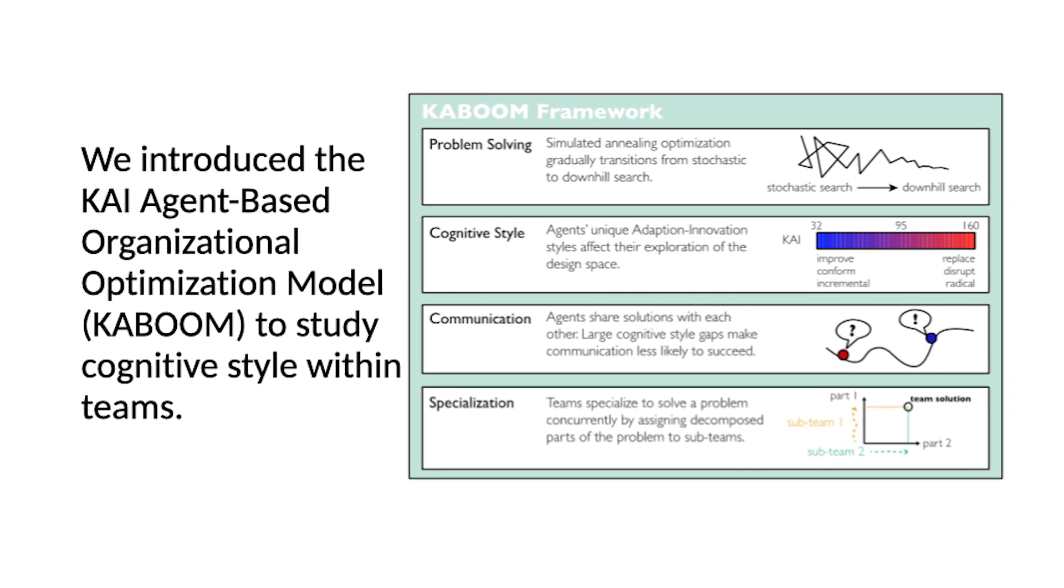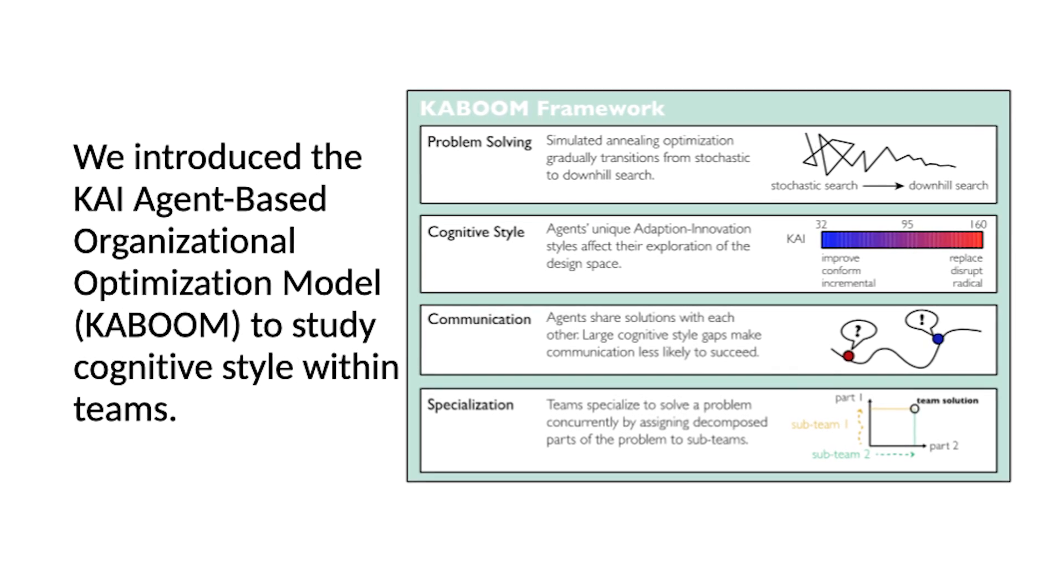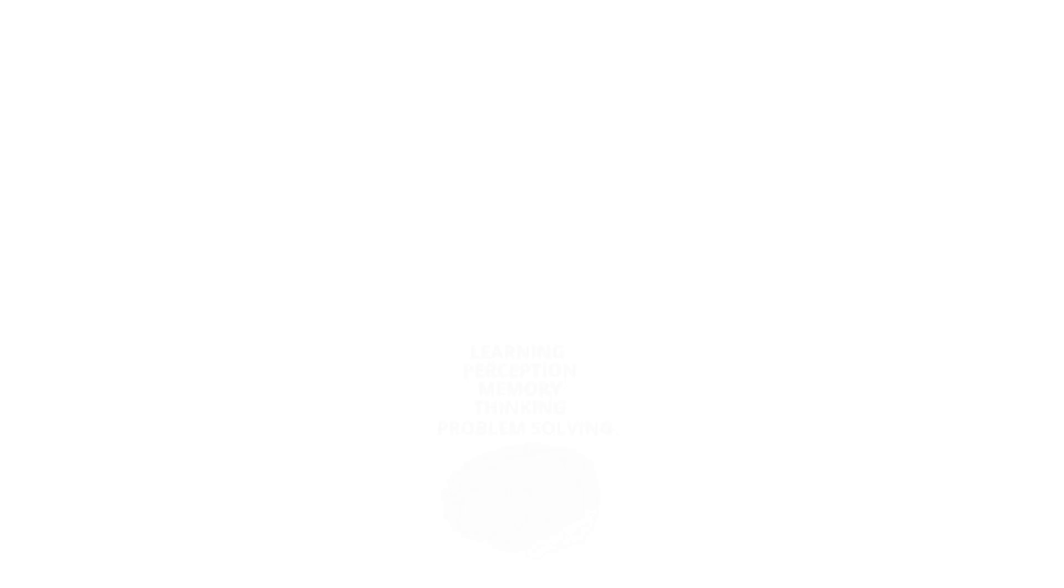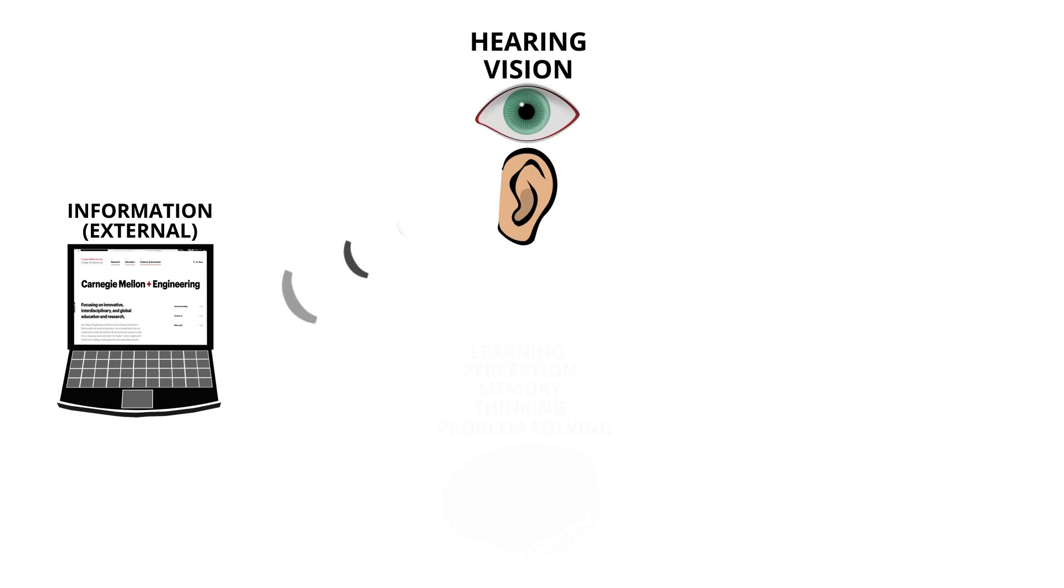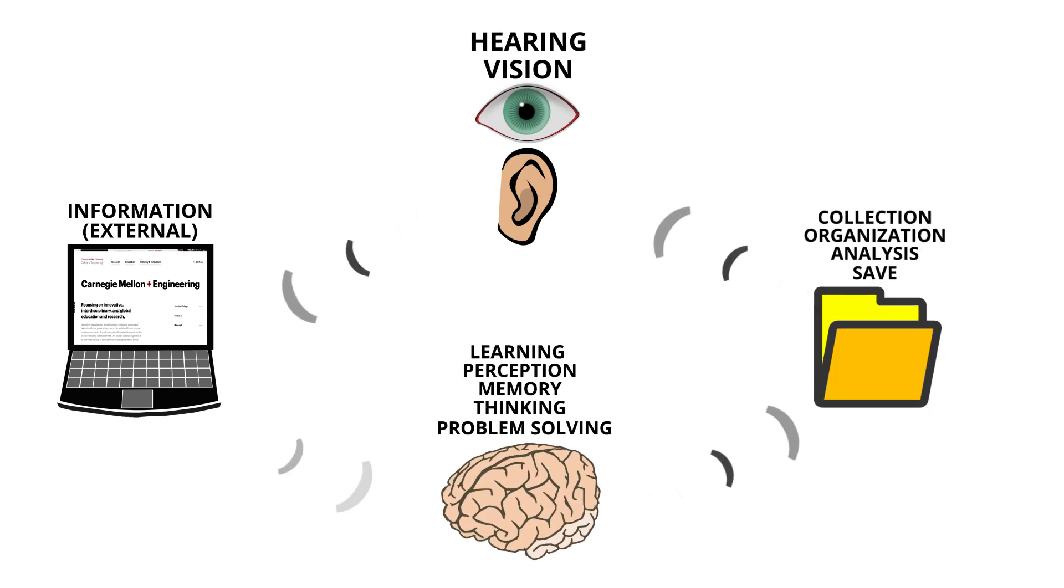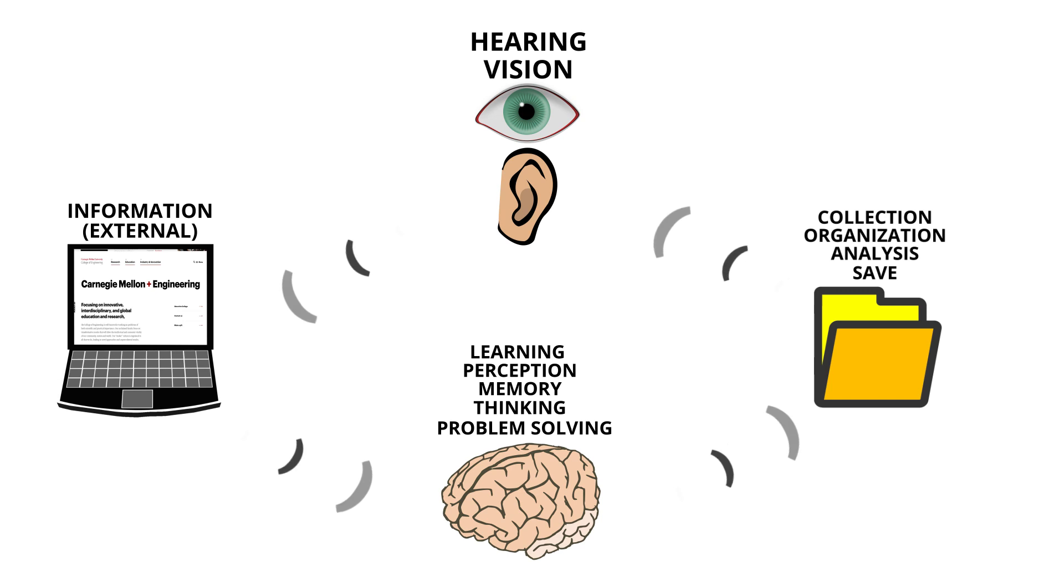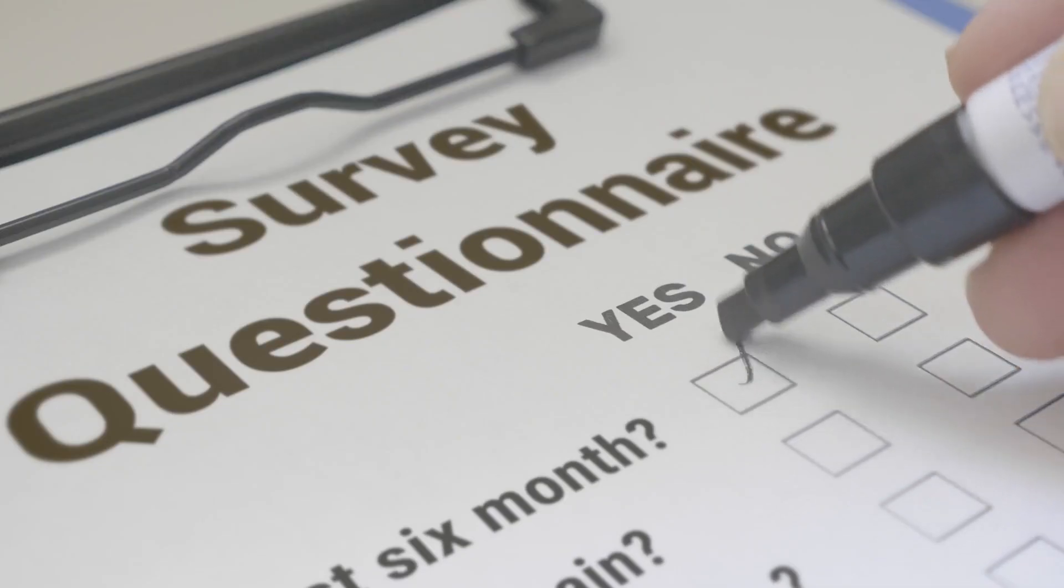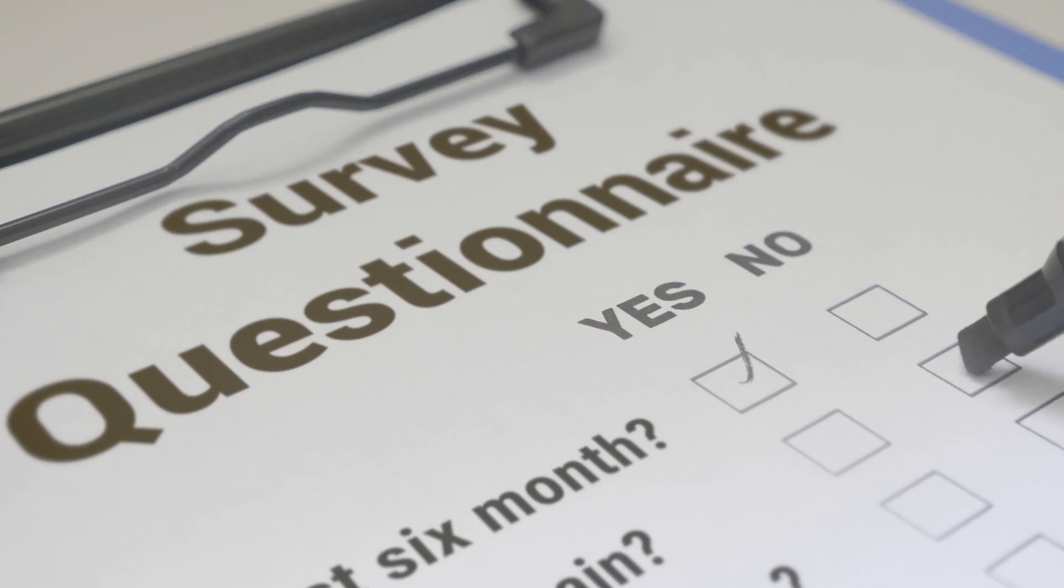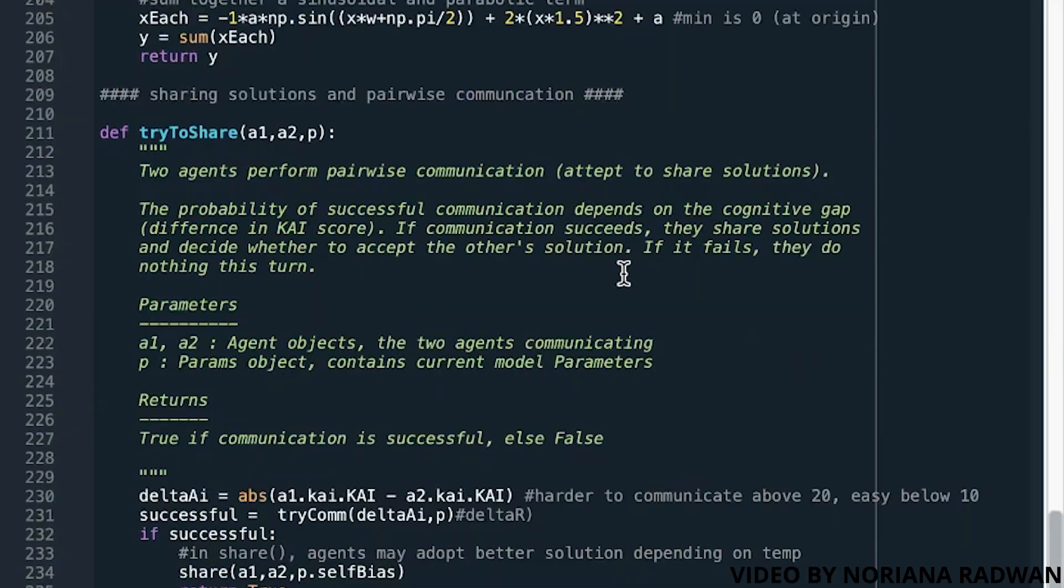A recent model that we've been working with focuses specifically on something called cognitive style, which is a measure of more or less how much structure you prefer when you're solving problems. The cool thing about cognitive style is that there are short surveys that we can give people in order to assess what their style is, so we can specifically model those people in our computational simulations.